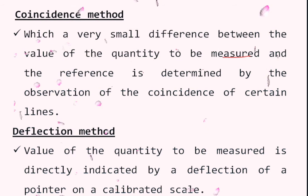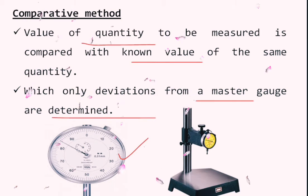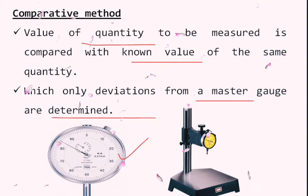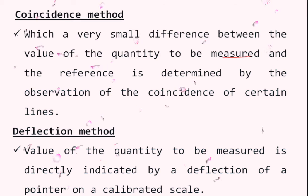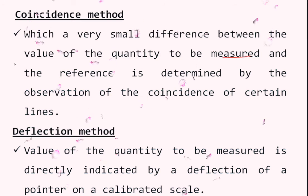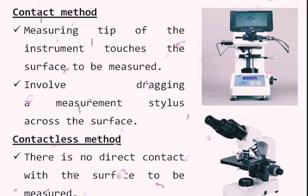To use the coincidence method well, the experimenter needs experience in handling the instrument correctly to get accurate results. Next, the deflection method: here the value of the quantity to be measured is directly indicated by the deflection of a pointer, such as a dial indicator. When using a mechanical or electrical comparator, the pointer deflects and based on its position you determine the value of the component.